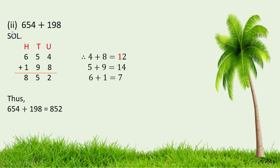In the second part of Question No. 1: 654 plus 198. Add 4 and 8, we get 12. Write 2 here, and 1 is the carry. Add 5 and 9, we get 14. Add this carry 1 to 14, we get 15. Write 5 here, and 1 is again the carry. Add 6 and 1, we get 7. Add the carry to 7, we get 8. Thus, 654 plus 198 is 852.